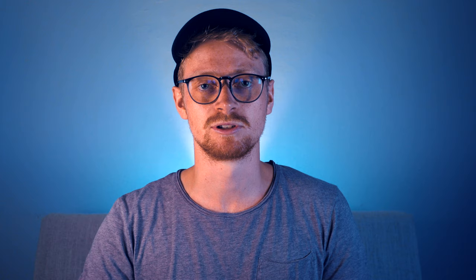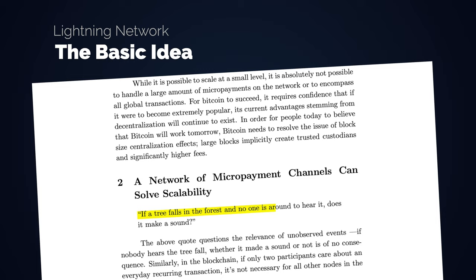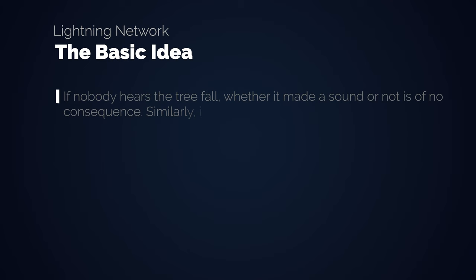A scaling solution is absolutely vital for Bitcoin to reach mainstream adoption. Many ideas were discussed throughout the years, but lightning is the one that really remained. The whitepaper introduced the basic idea in very interesting fashion that is easy to understand. If a tree falls in the forest and no one is around to hear it, does it make a sound? If nobody hears the tree fall, whether it made a sound or not is of no consequence.